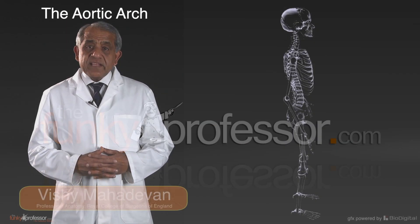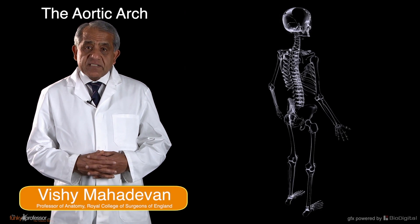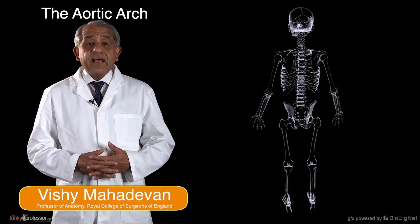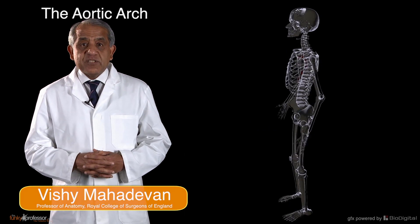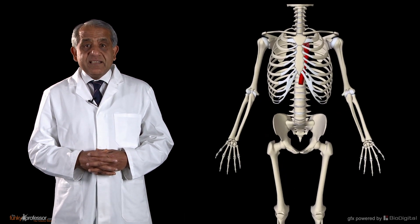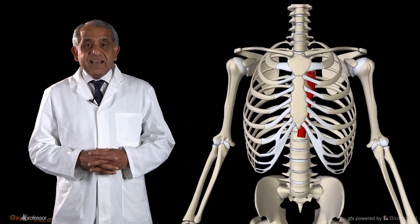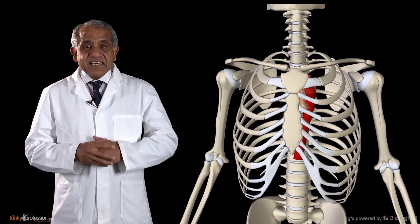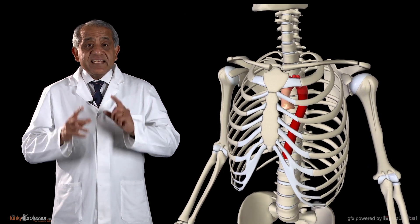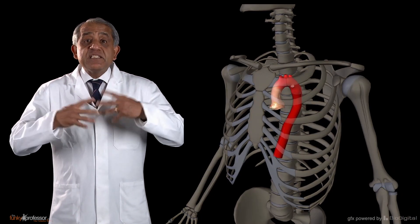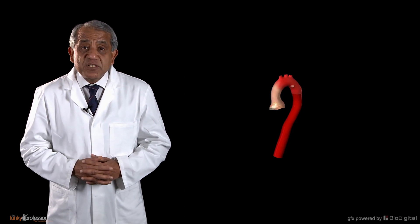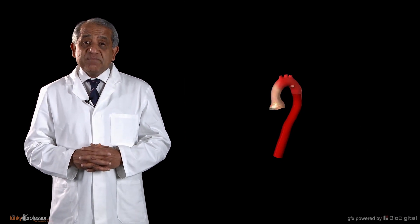The aorta within the thoracic cavity — in other words the intrathoracic aorta — has three segments to it. It's interesting to note that each of those three segments is in a different subdivision of the mediastinum.